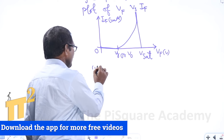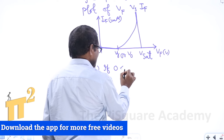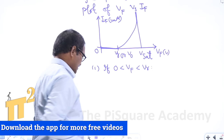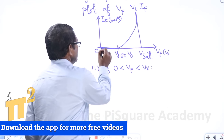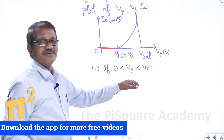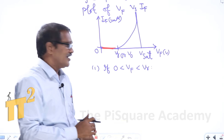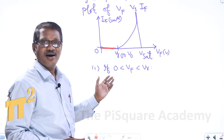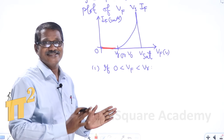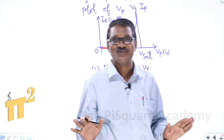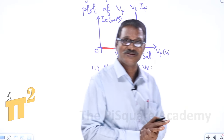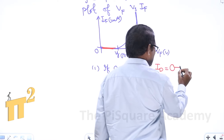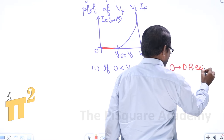The first case is when 0 is less than Vf is less than V-gamma. In this region, the diode current is zero — no current will be flowing through the diode. Because before V-gamma or before the contact potential, the depletion region exists which prevents the movement of majority charge carriers to constitute majority current. The diode current is zero in this case since the depletion region exists.